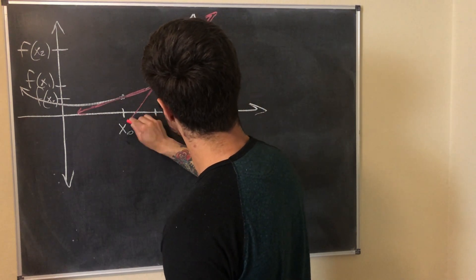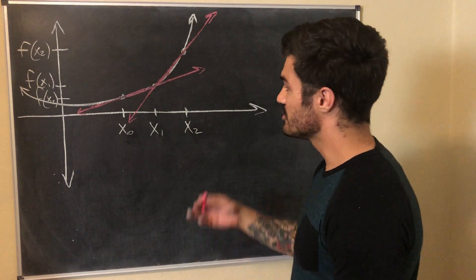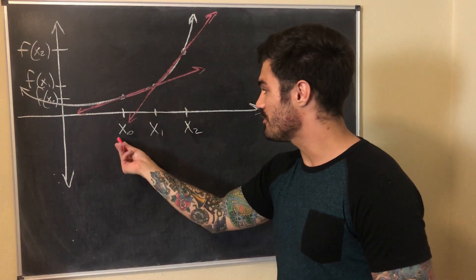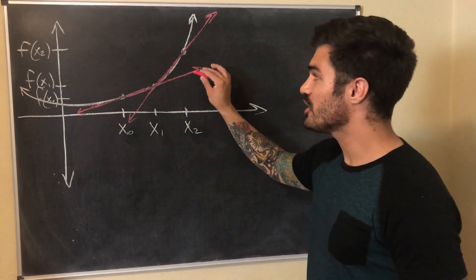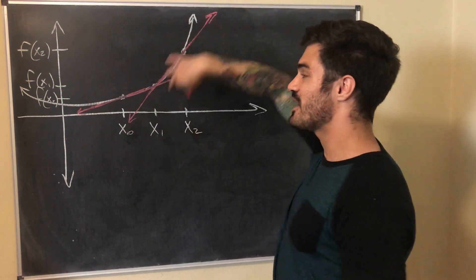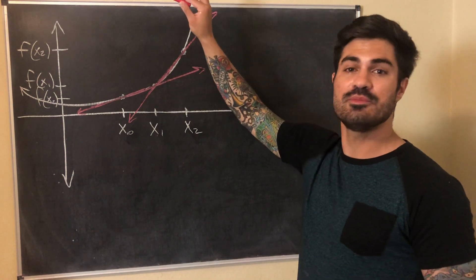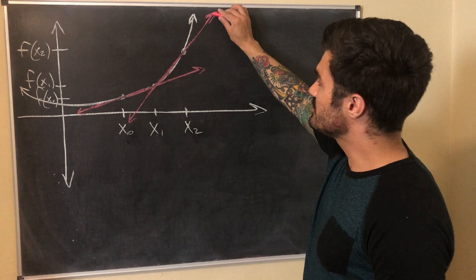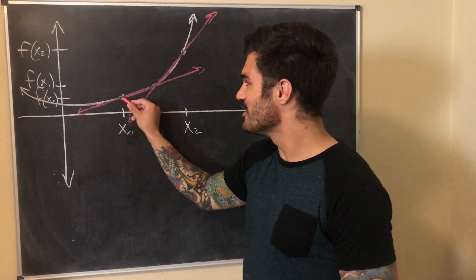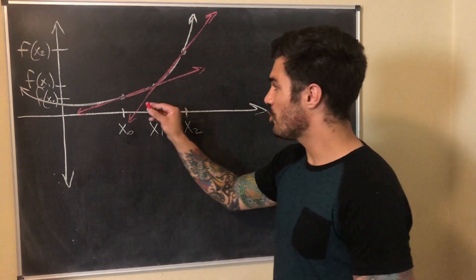Let's look at this second secant line here. Again, the slope of this secant line gives us the average rate of change between these two points. As we can visually see, from x1 to x2 our function is changing a lot more than from x0 to x1. If I drew an x3 up here, that line would be even steeper. So what we can say is that the slope of this function is not constant — it's actually increasing as we go further along the function, getting steeper and steeper.